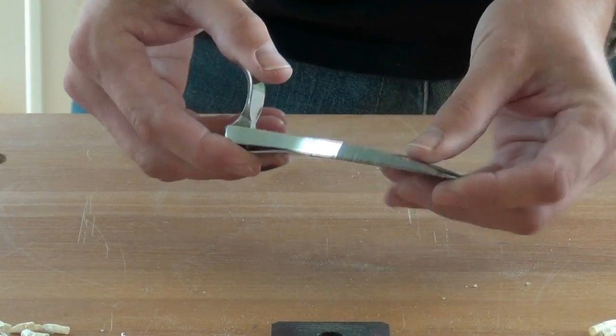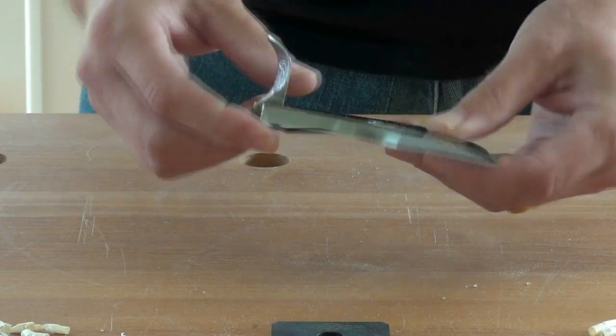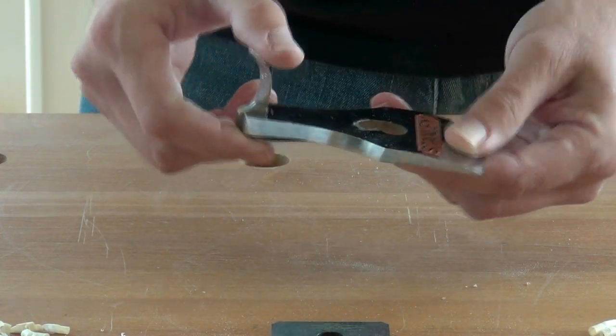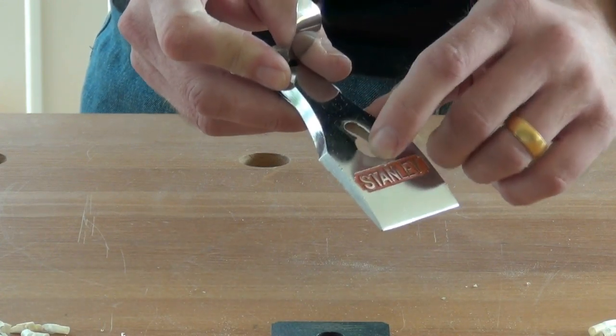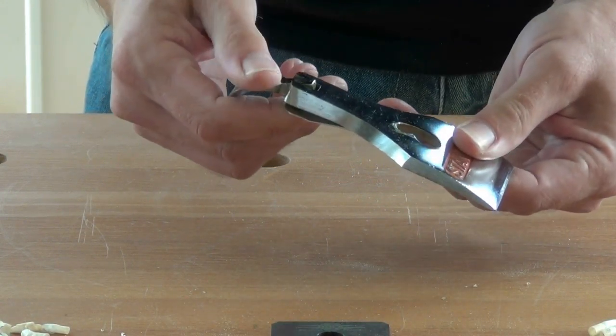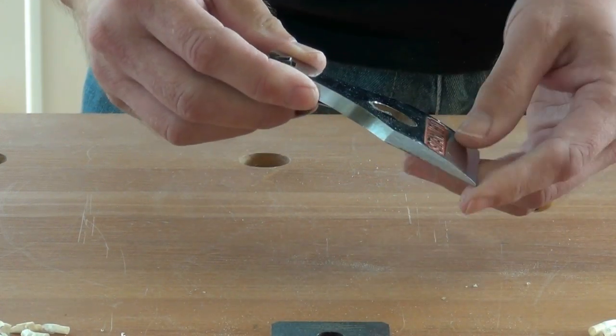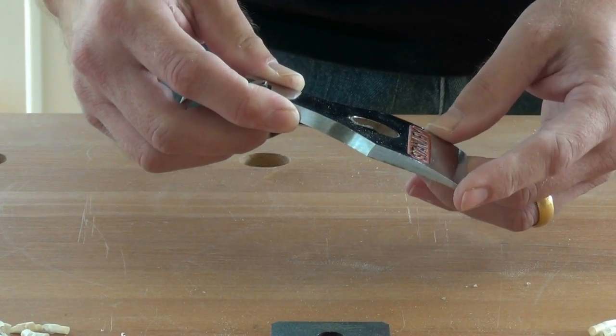The lever cap is a fairly stout casting with a piece of spring steel and a lever and a hole through which the screw in the frog is engaged. Pushing the lever down tightens the lever cap onto the iron, preventing it from moving from the frog.